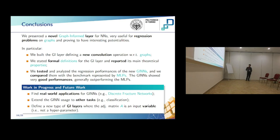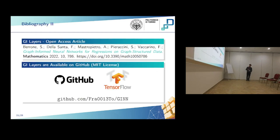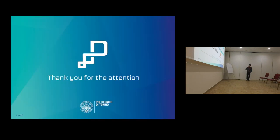In the future, we aim to define a new GI layer where the adjacency matrix A is not a fixed hyperparameter but a variable, so we can apply GINNs to different kinds of graphs. The paper is published in the journal Mathematics, and if you want to try graph-informed neural networks for your own problems, the GI layers are available on GitHub. You can download and insert these layers into your neural networks using Keras and TensorFlow.